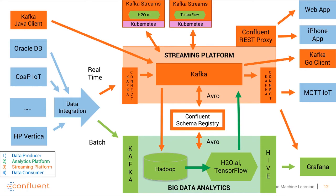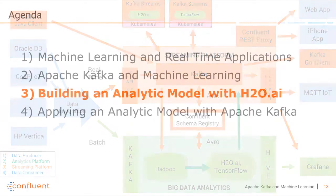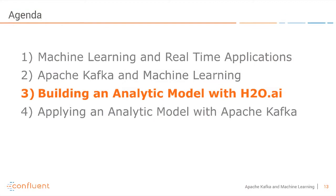Now let's go to the real world example. In this case I use H2O, but as we'll see we could build an analytic model with many other things. The important thing to think about here is that the model has to be scalable — and that's always a challenge when working together with data scientists and developers. There are many different technologies, and in the beginning you have to think about how you need to scale and how it has to perform, and then you can choose the technologies.